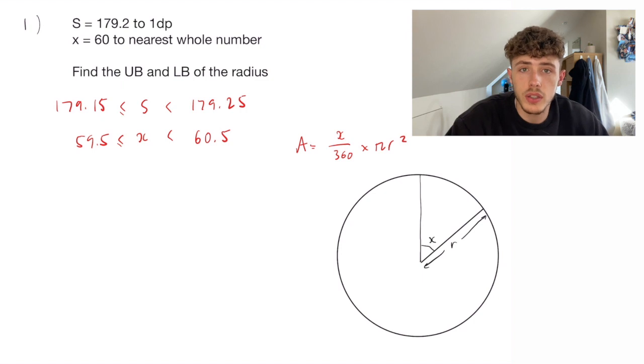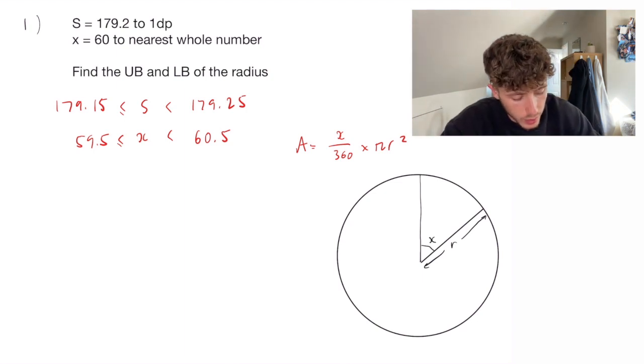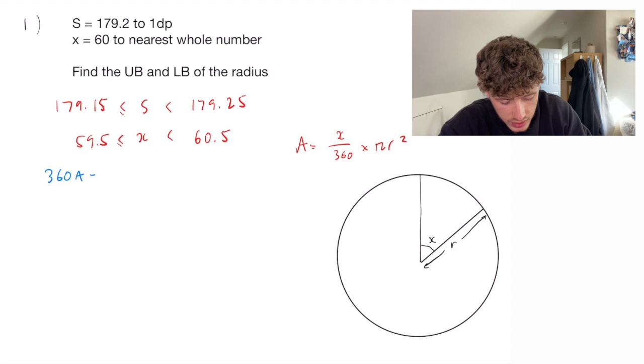Now if we're trying to work out the radius, we need to rearrange the area of a sector equation to have r as the subject. So rearranging this one, we're going to multiply up by 360. So 360a equals x pi r squared.